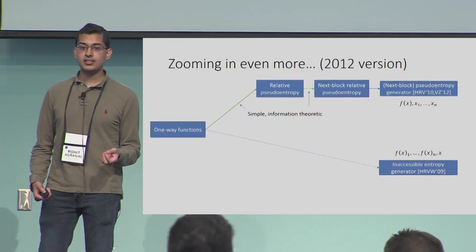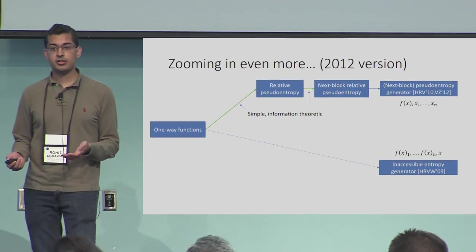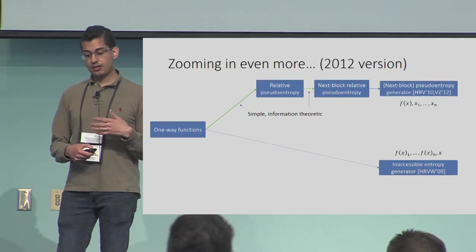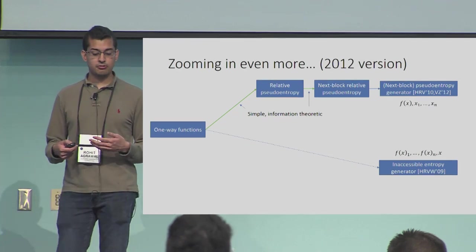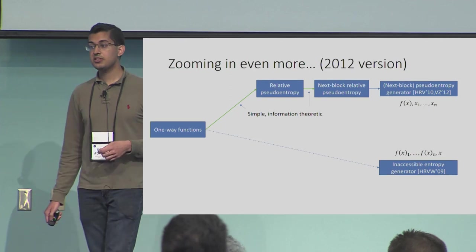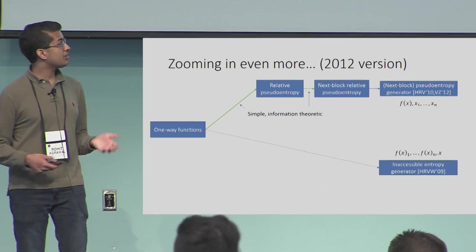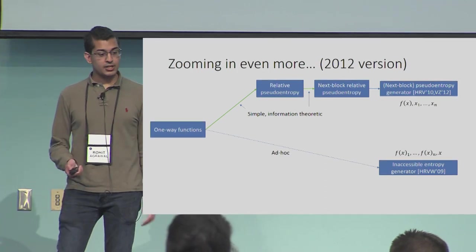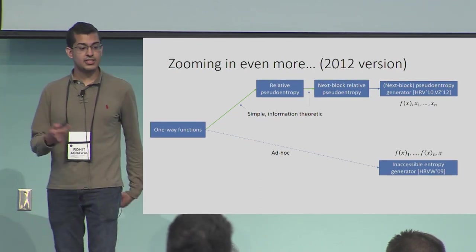The key idea is that relative pseudo-entropy is a very simple, beautiful, information-theoretic notion that is easily derived from one-way functions. It lets you manipulate this hardness in a very information-theoretic way, isolating the computational part of the proof to just one step — separating the information-theoretic and computational aspects for a simpler, tighter reduction. However, that work was entirely for pseudo-entropy, so it left the inaccessible entropy leg of the diagram unchanged.